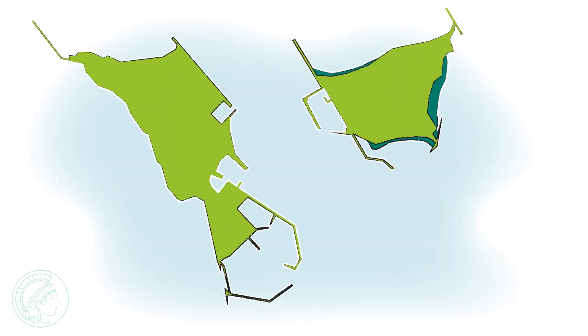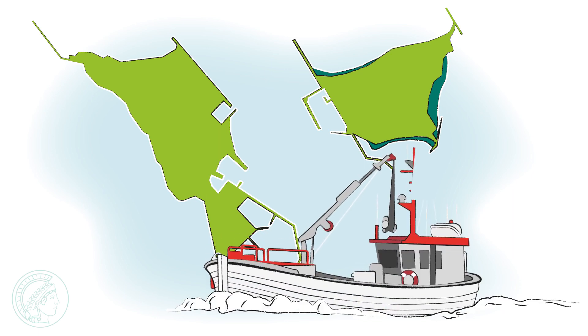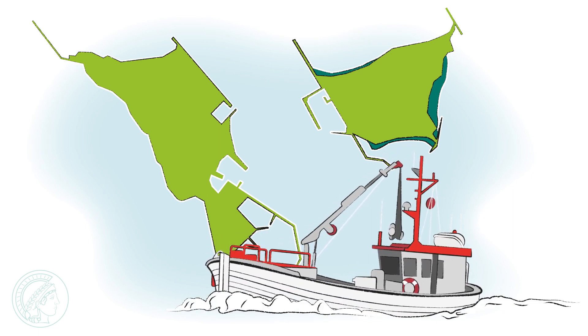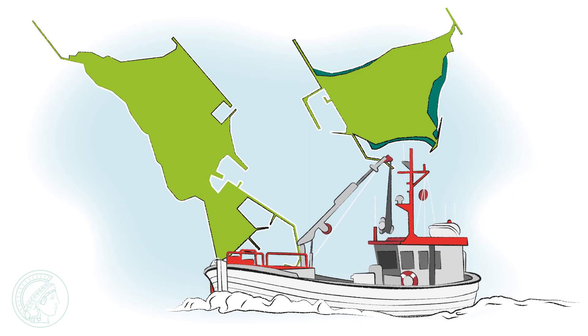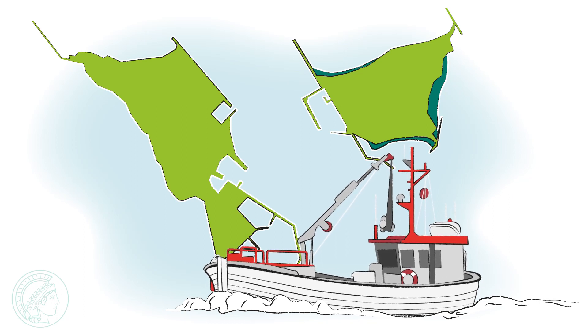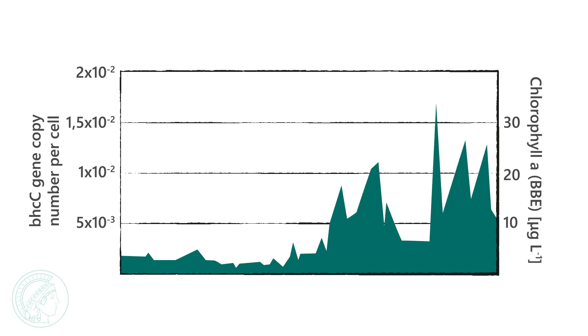Samples were taken from the offshore island of Helgoland during several expeditions in order to determine the formation and consumption of glycolic acid during the annual algal bloom. And indeed, the number of gene copies of the BHA cycle's key enzyme correlated with the peaks of the algal bloom.